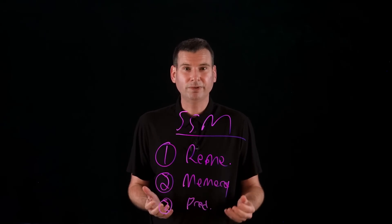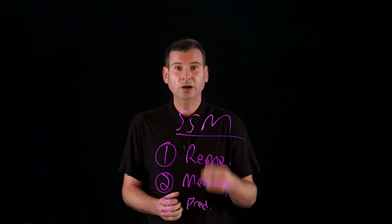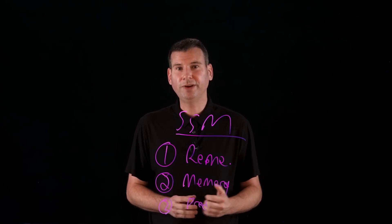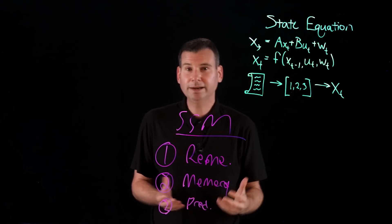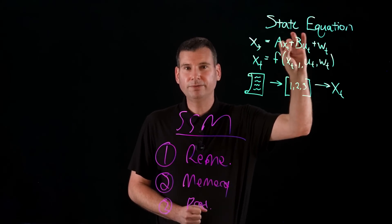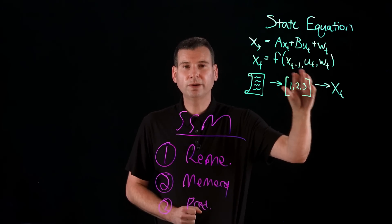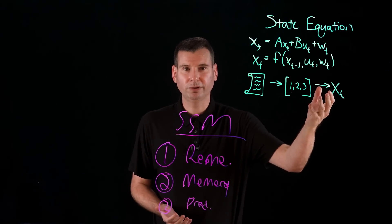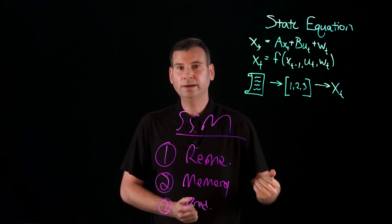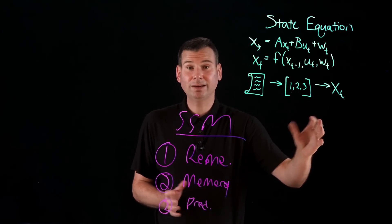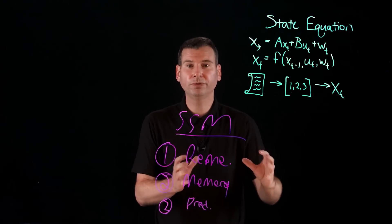Let's dive into SSMs and figure out what they really are. These state-space models represent systems using two key components. The first is called the state equation, which models how a hidden state evolves over time. X sub T is the state vector at time T, while matrix A defines how the system changes. U sub T is the control or bias input, while B is the matrix that changes how inputs affect that state. Finally, W processes the noise that can impact even the creativity of the system. In essence, this state equation says how the world evolves internally.